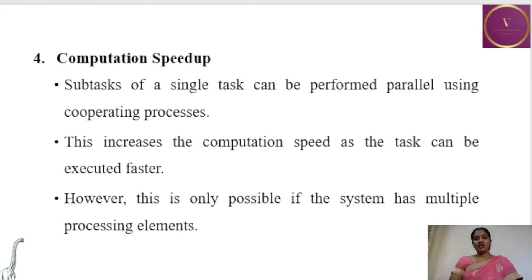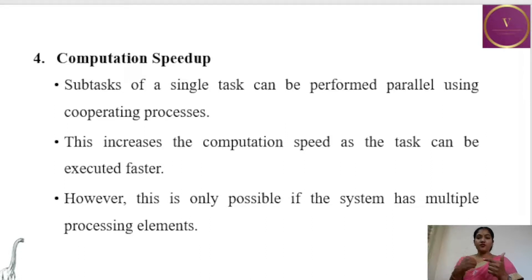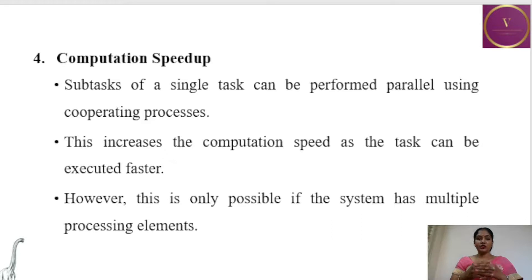The next reason is computation speedup. In order to increase the speed of completing a project, we go for cooperative processes. A big task is divided into smaller modules, each worked on in parallel, and finally combined to form the completed project. Subtasks of a single task can be performed in parallel using cooperating processes, increasing computation speed. However, this is only possible if the system has a multiprocessing element.